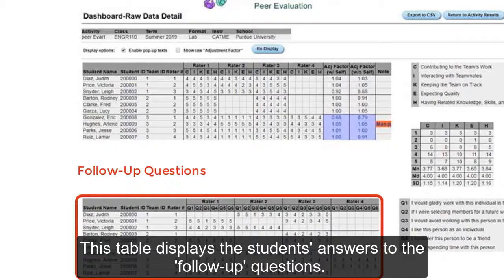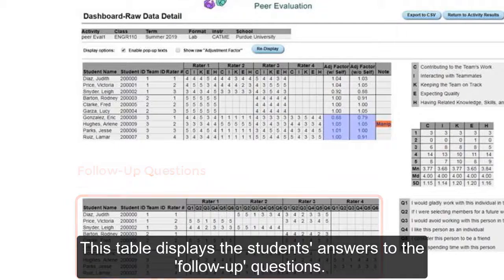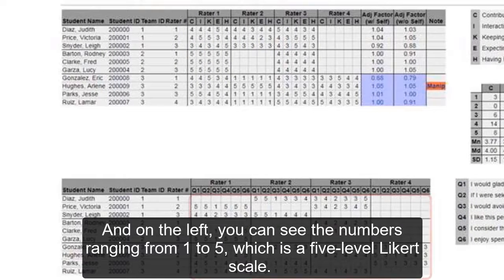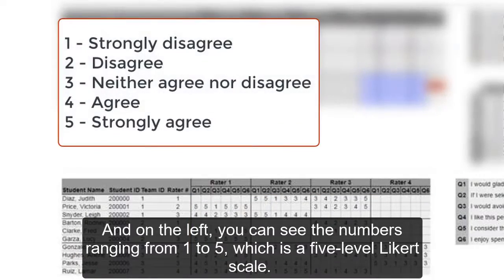This table displays the students' answers to the follow-up questions. To the right, you can see the questions they were asked. And on the left, you can see the numbers ranging from 1 to 5, which is a 5-level Likert scale.